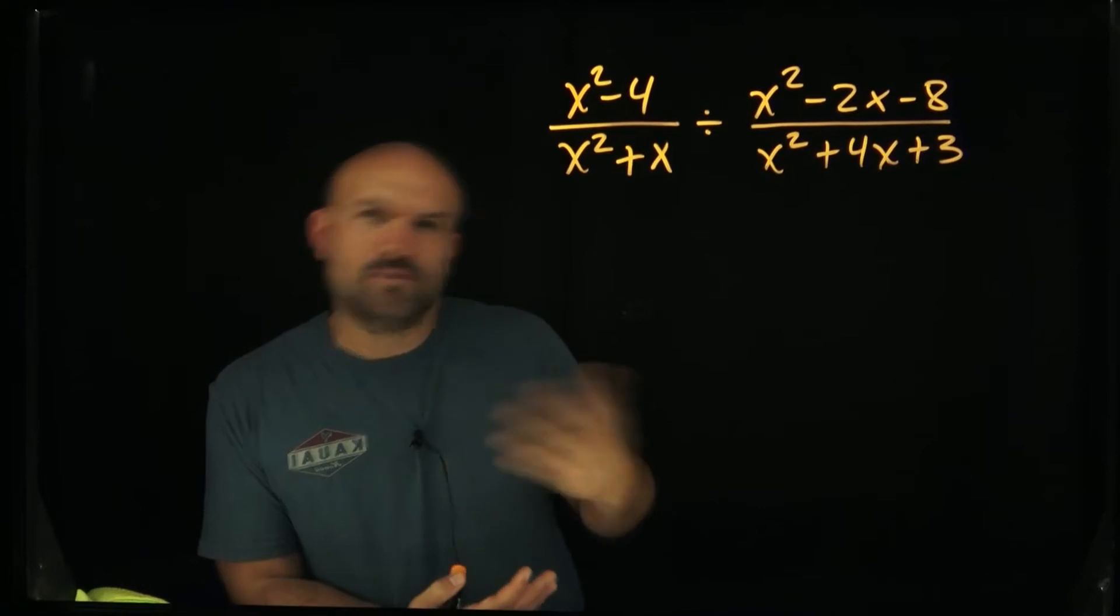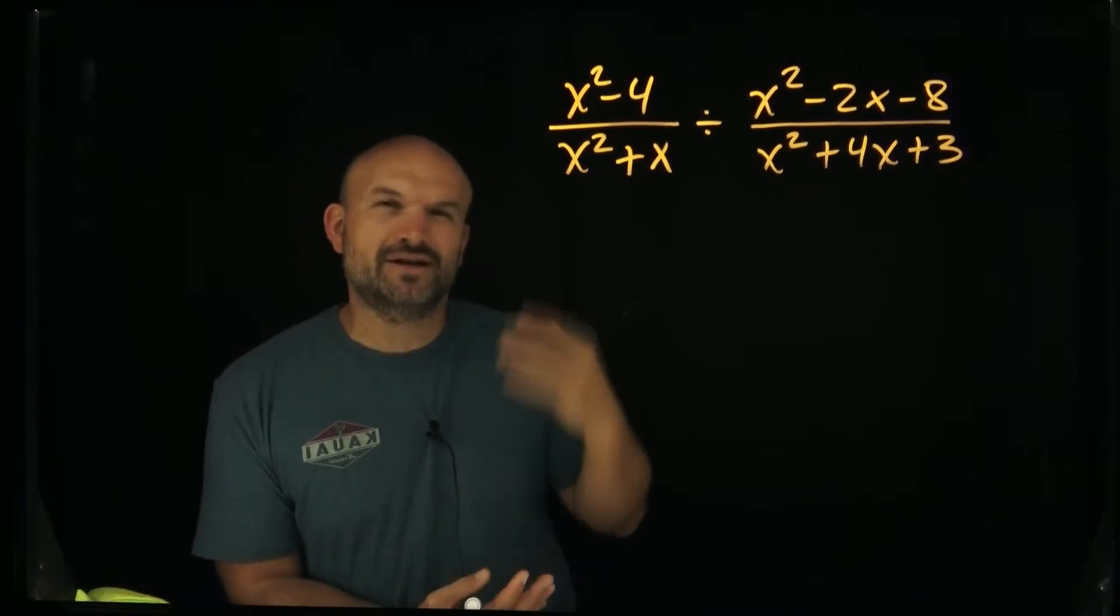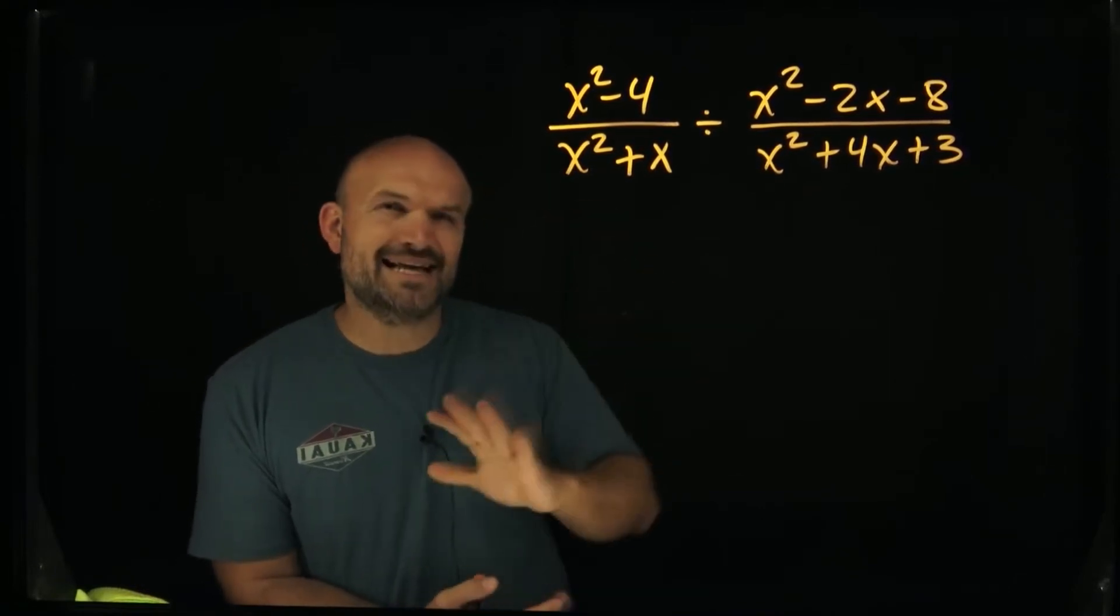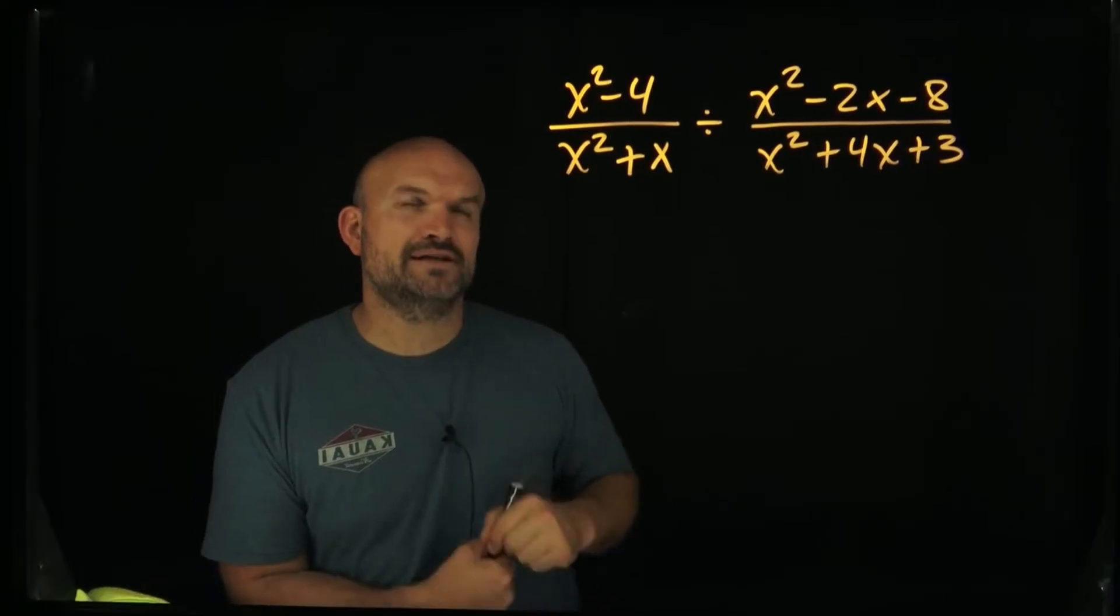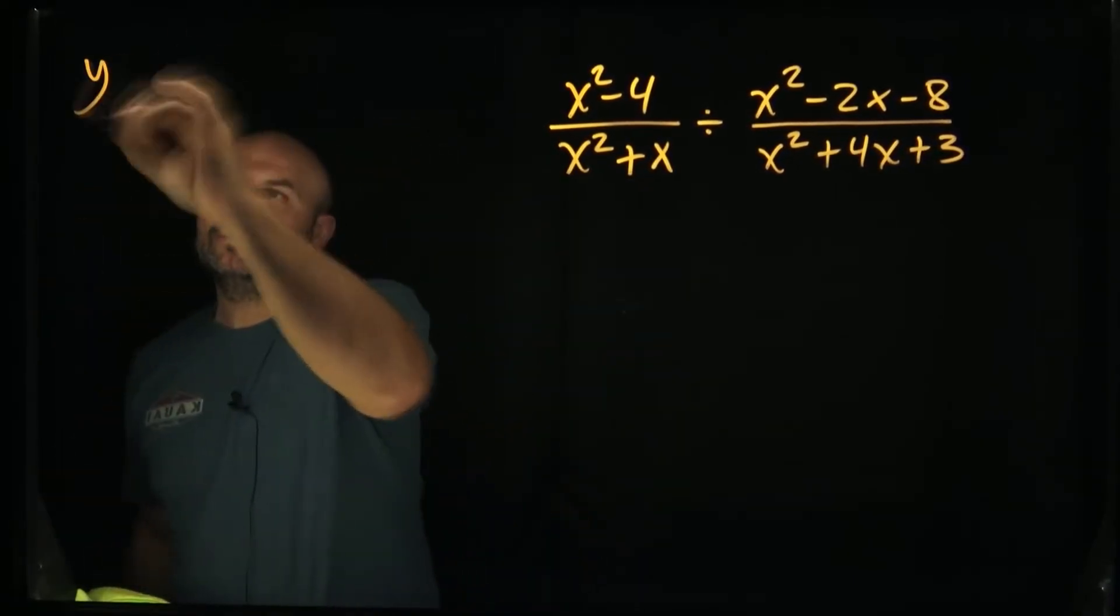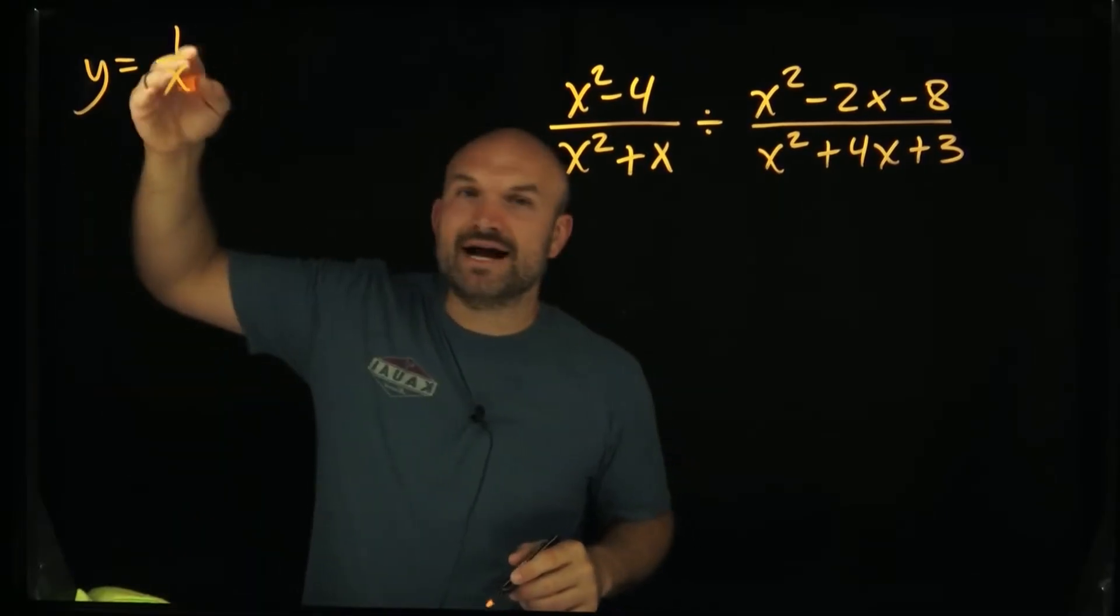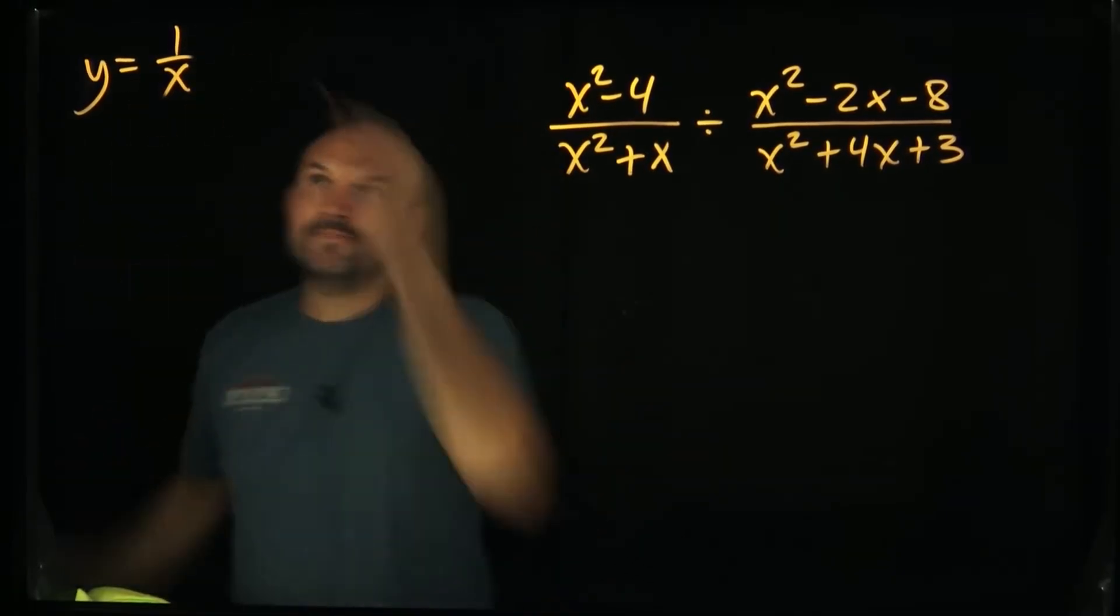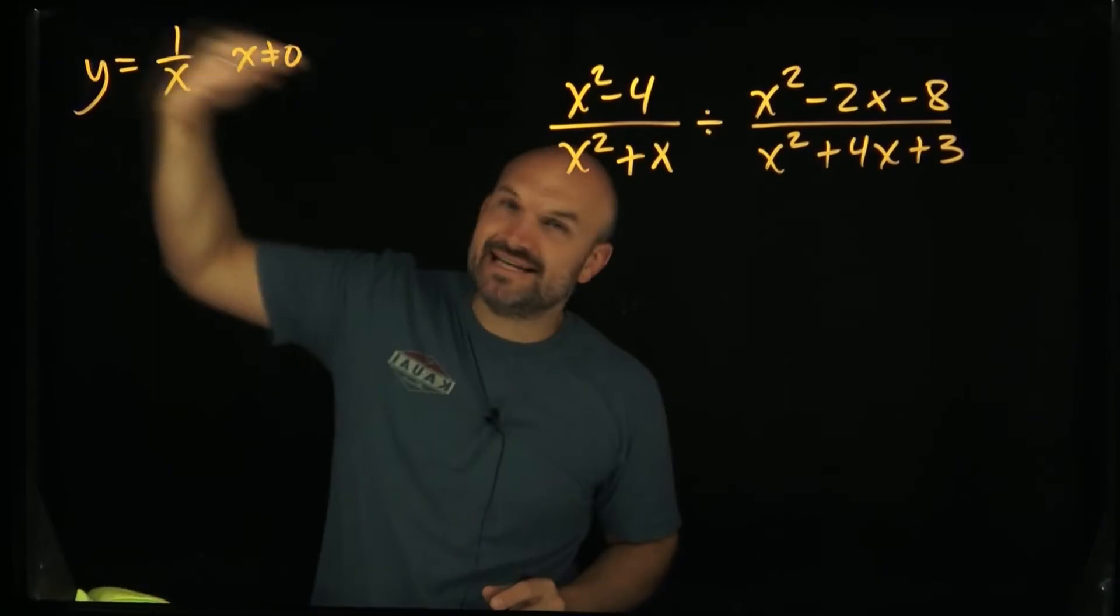And some students want to know why, why can't you do that, and want to look at maybe a graphical approach. So I'll add on to that just a little bit. I don't want to go too deep, but I do want to show like if I had the example or the function y = 1/x, we know that x cannot equal zero. And the reason being is because we can't divide by zero.